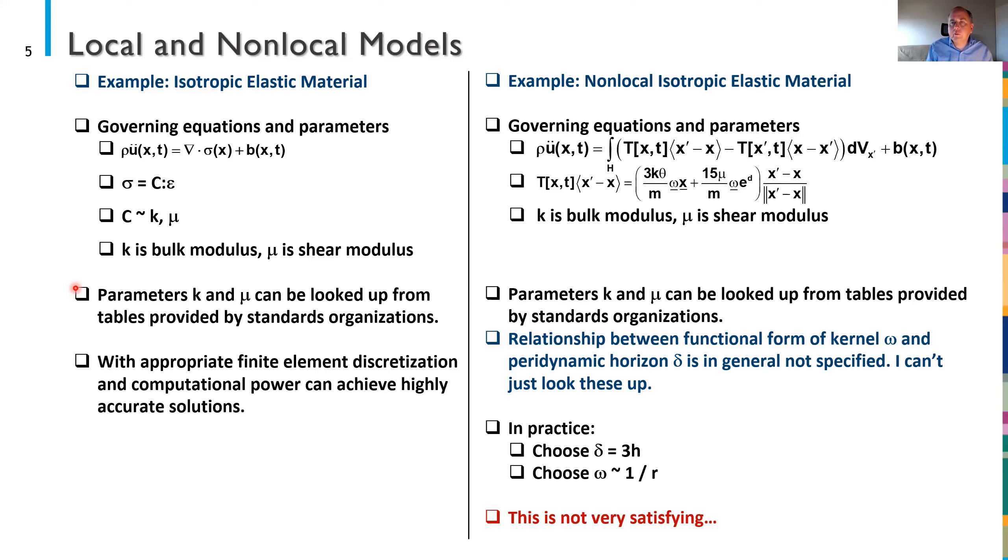Here I've written a linear peridynamic solid model for example. Here's my force state t and you can look at this and say oh well there's my bulk modulus, there's my shear modulus. I can look these up. I know what they are. But not everything is explicitly determined. The functional form of the kernel is not necessarily specified explicitly here. What the peridynamic horizon δ is is in general not specified. There aren't organizations who are computing these things for particular materials and putting them in standard tables or locations where we can use these. And so we're left kind of trying to figure these out on our own.